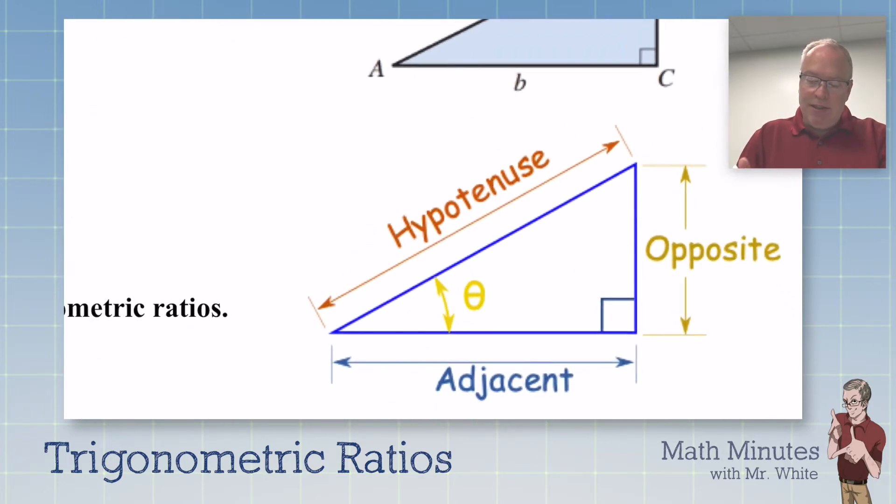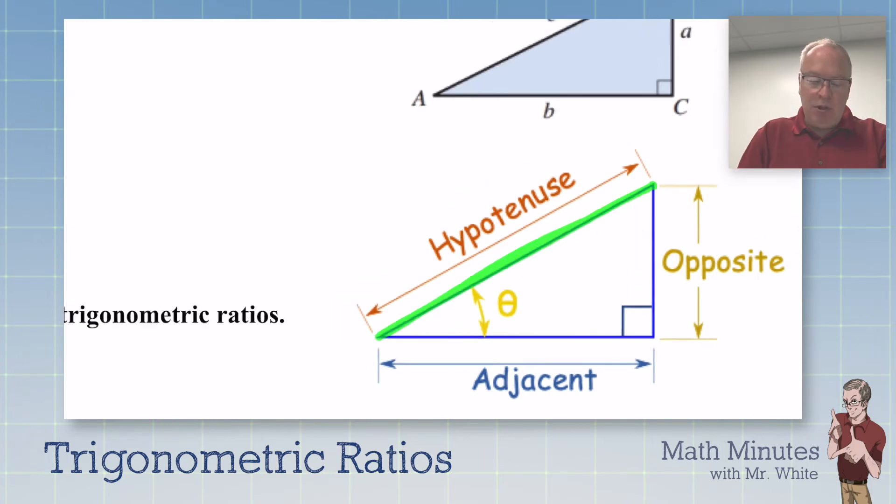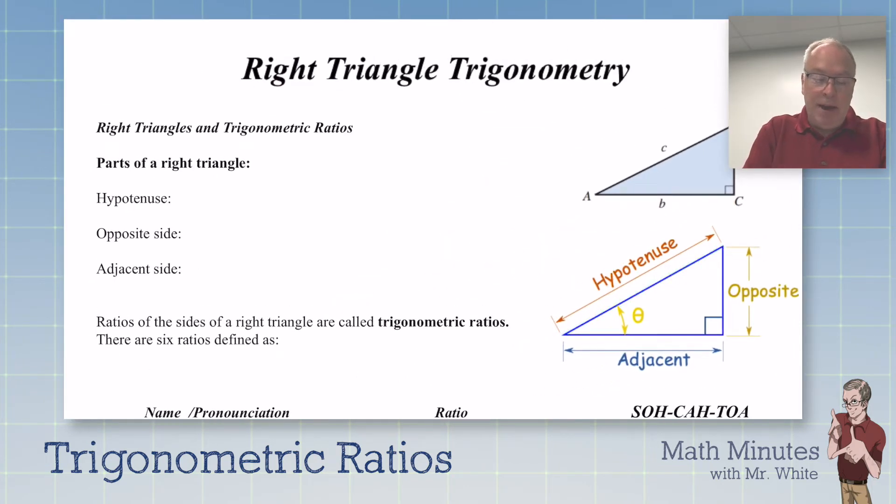The longest side is called the hypotenuse. The longest side is called the hypotenuse, and it's also across from the 90.